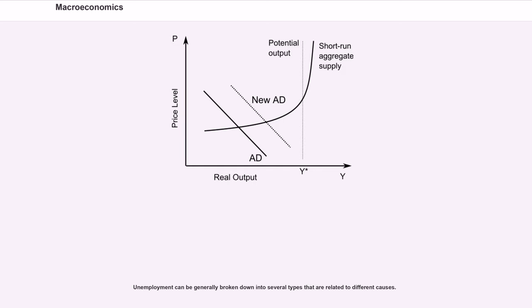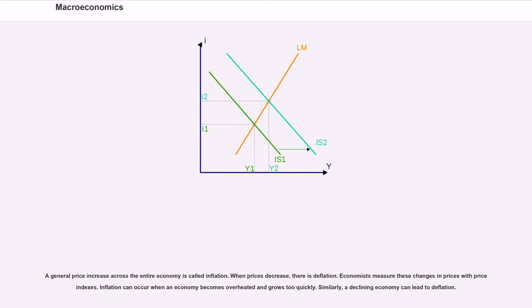Unemployment can be generally broken down into several types that are related to different causes. A general price increase across the entire economy is called inflation. When prices decrease, there is deflation.